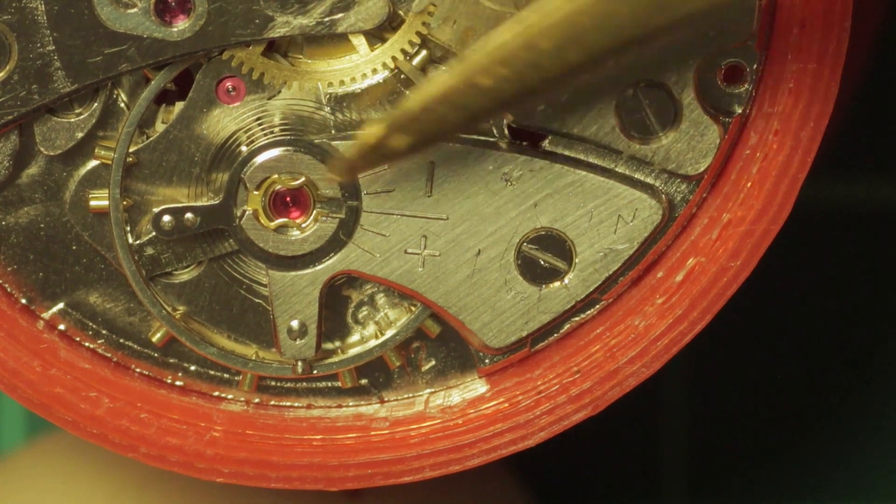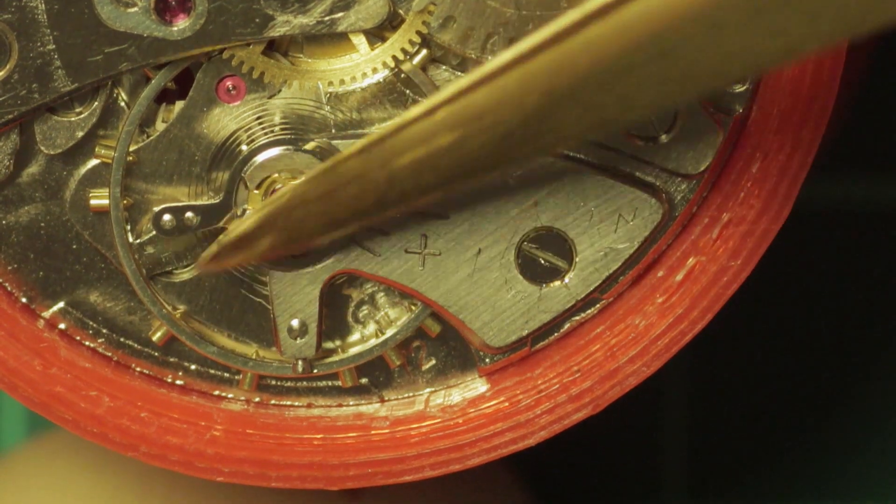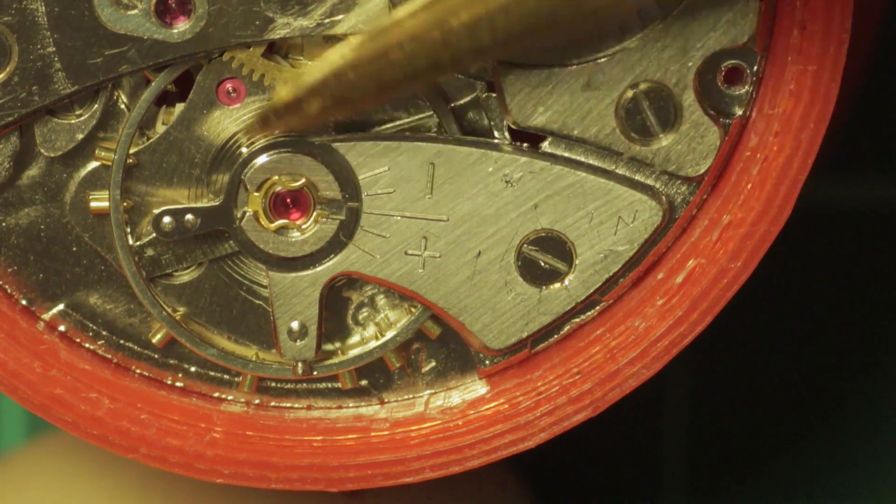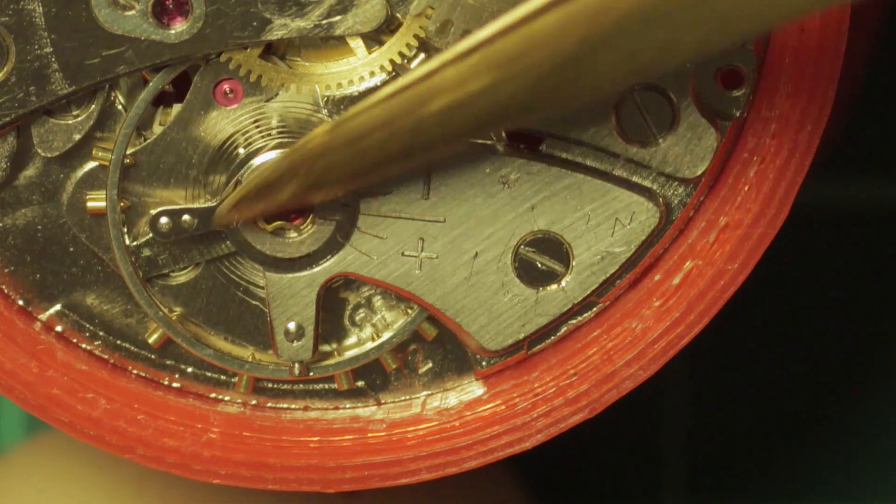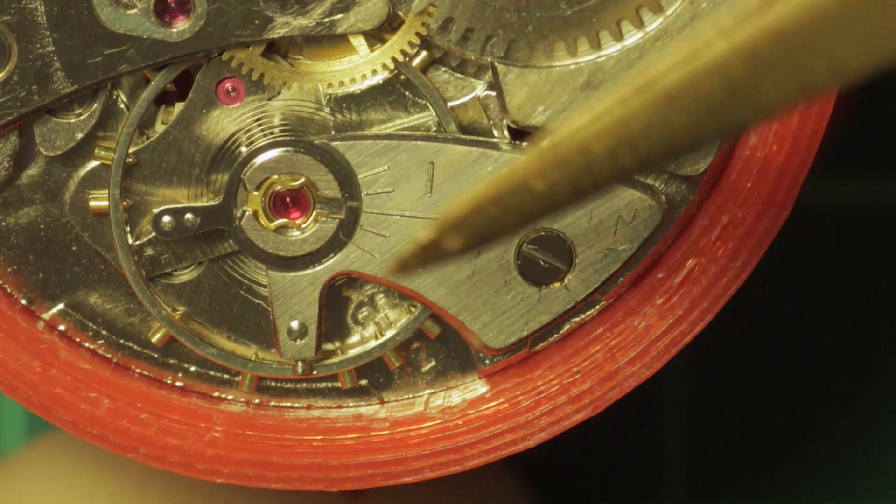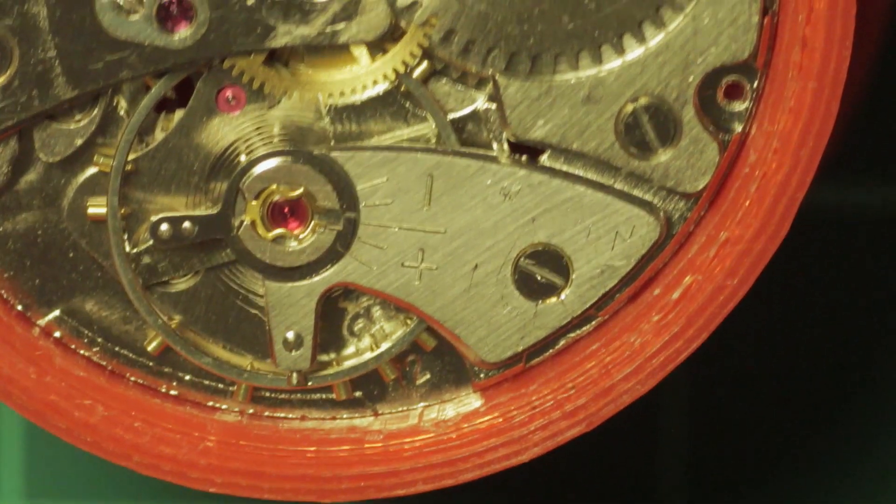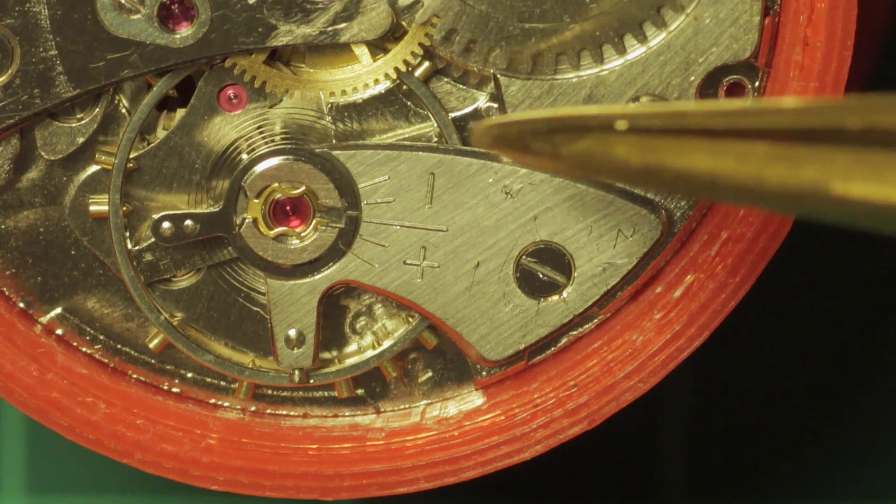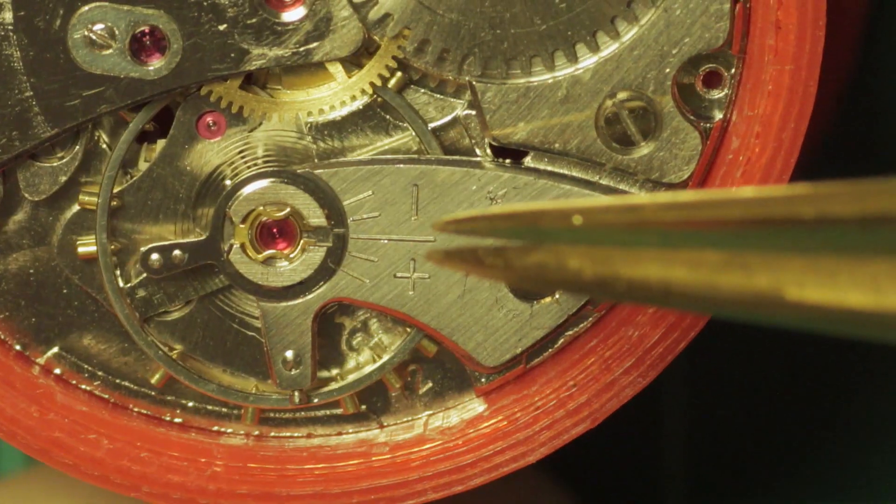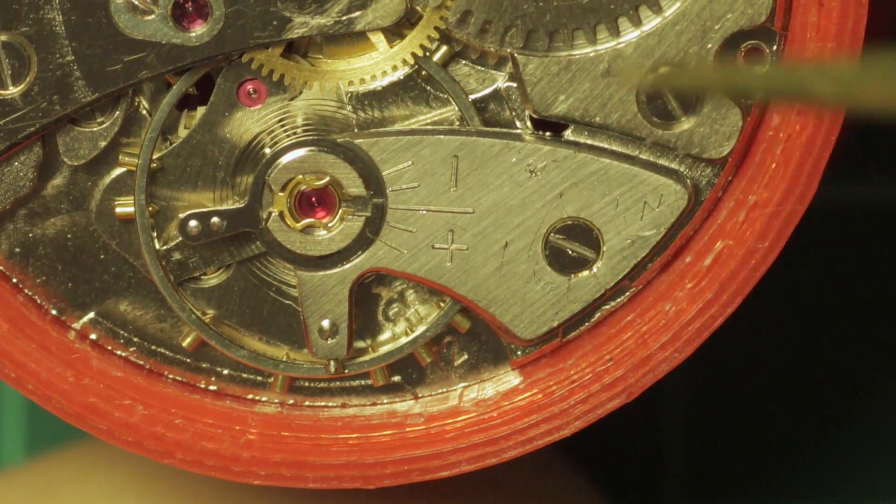You can see there that the pallet fork pivot is indeed smack bang in between the two of them. So if you have a balance with only two arms, the impulse jewel should be directly in between both of them, because this is logically the most even point to be the middle. To determine that you're getting a swing of 180 degrees, which is a good rate to calculate your lift angle from...